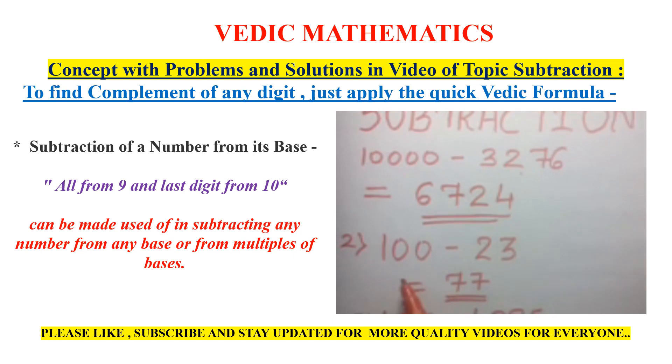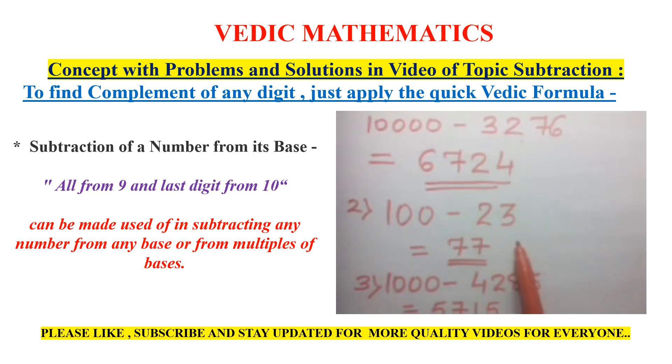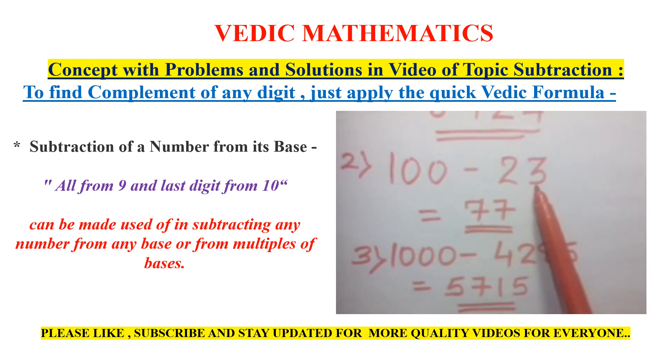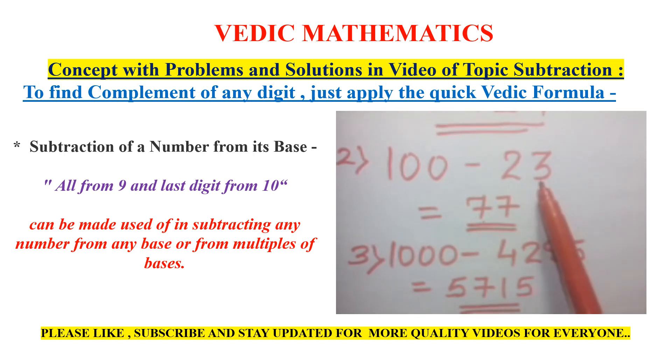Second example, 100 minus 23. 2's complement is 7. 3, that is the last digit, 10 minus 3 would be 7. So the answer is 77 for the complement of 23.